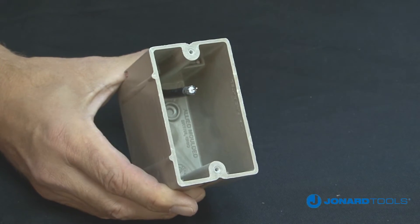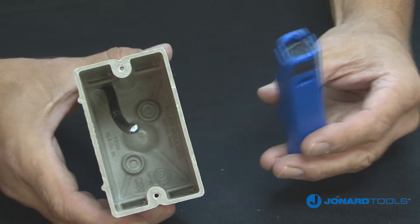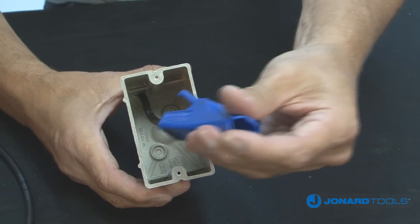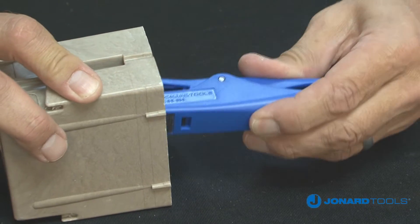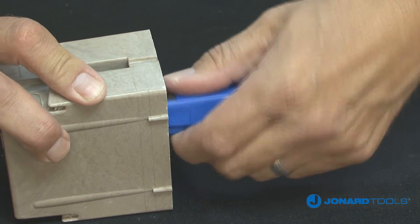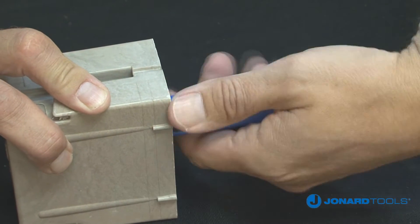To use the CSS-596, squeeze the tool open and then close over the exposed cable. To ensure proper cable stripping, make sure the cable is flush and butts up against the stop. Allow the spring pressure to hold the cable in place.